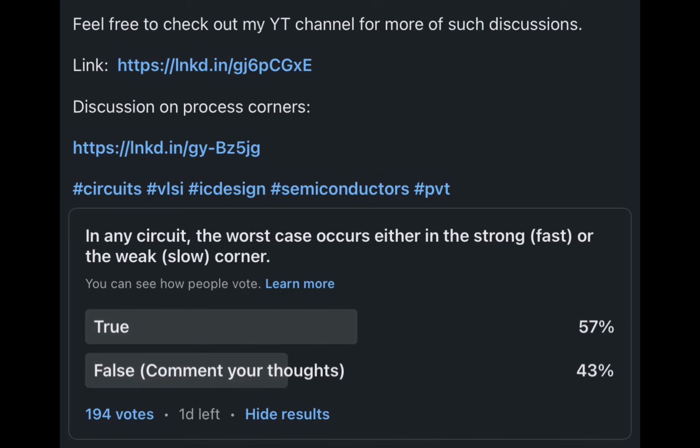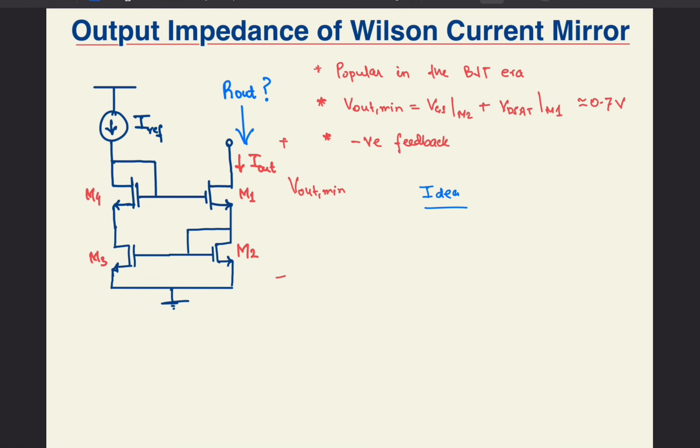Also, I asked this interesting question on LinkedIn and here on YouTube. I'll discuss it towards the end of the video, so make sure you watch till the end. The general idea behind current mirrors is that if two identical transistors have the same VGS and VDS, then the same value of current would flow through them.